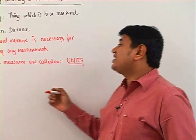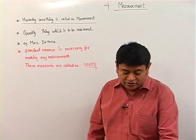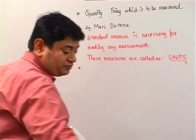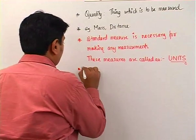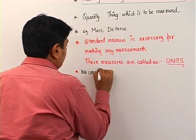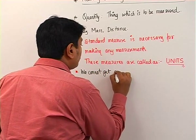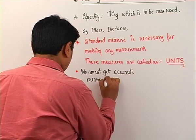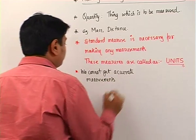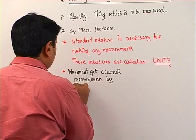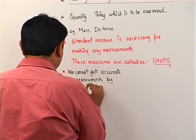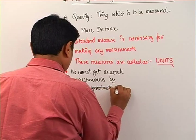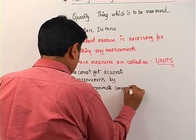So write this point: we cannot get accurate measurements by making approximate comparisons. Measurements must always be accurate, not based on approximations.